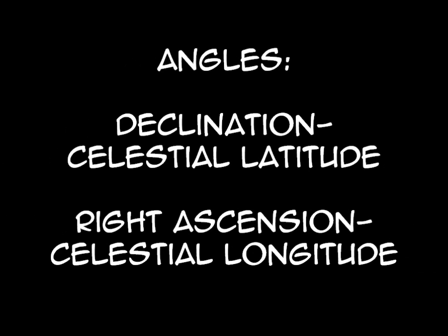The two angles we measure are the angle of declination (the celestial latitude) and the angle of right ascension (celestial longitude). Retrograde motion: where a planet seems to change direction in complex patterns relative to distant stars before carrying on as normal.